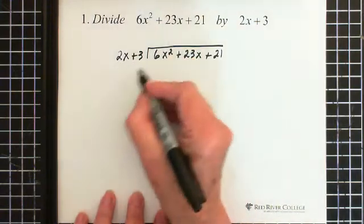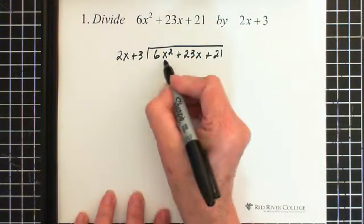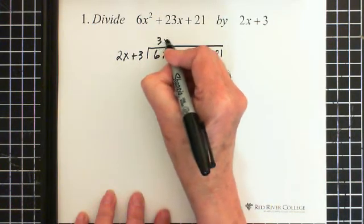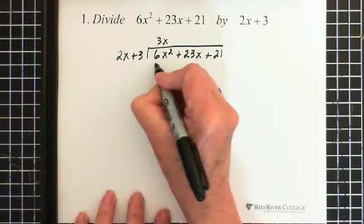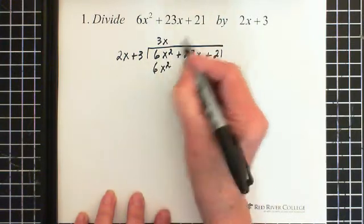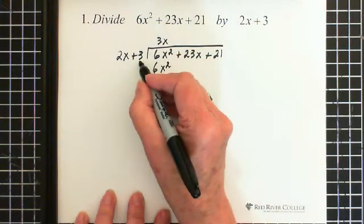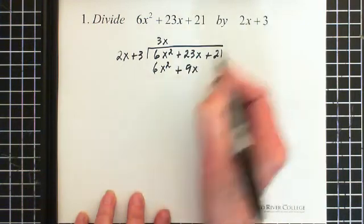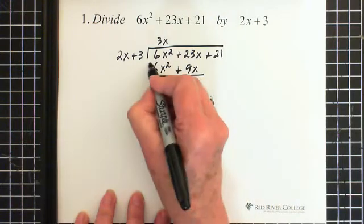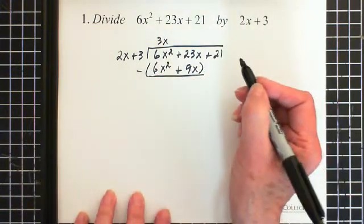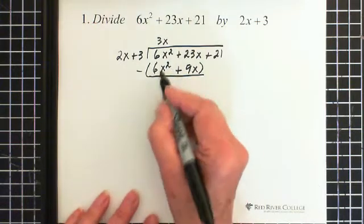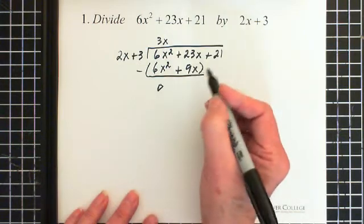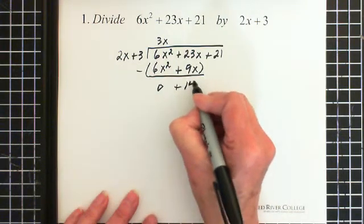So now what we do is we ask ourselves, what do we have to multiply by 2x to give us 6x squared? And that would be 3x. So 3x times 2x is 6x squared, and then we take that 3x and multiply it by the 3, and that gives us plus 9x. Draw our line, and we are subtracting this entire piece. So 6x squared minus 6x squared is 0, and 23x minus 9x is plus 14x.